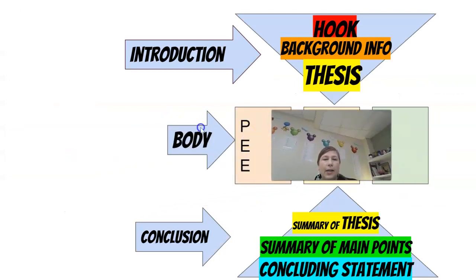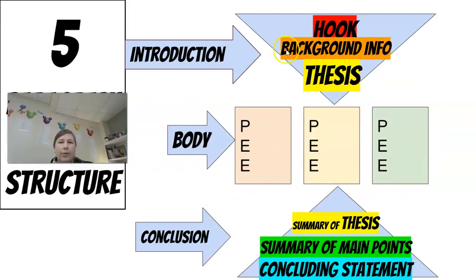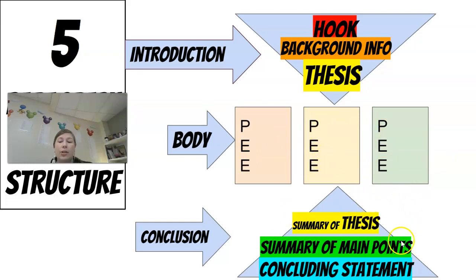Your essay will include an introduction, which has a hook, background info, and a thesis — that should make up your five to seven sentences. Each one of your body paragraphs should have a point, some evidence, and an explanation, again five to seven sentences. Then your conclusion is a summary of main points and a concluding statement. I'll go over each of these throughout this video.